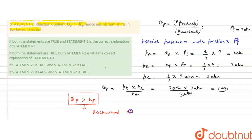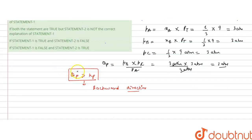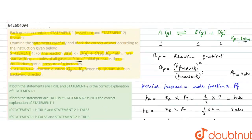Since Qp is greater than Kp, the reaction will move in the backward direction. If it moves in the backward direction, the partial pressure of A will increase because there are gaseous species and the backward reaction is favored. So the assertion — that partial pressure of A increases — is correct. The reason given is that Qp is greater than Kp, hence equilibrium shifts in the backward direction, which is also true. Due to the backward shift, the partial pressure of A increases, so the reason is also the correct explanation for the assertion.